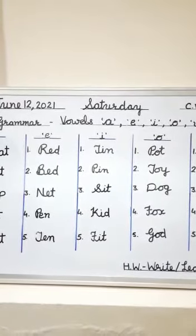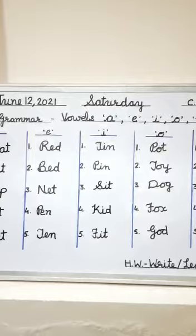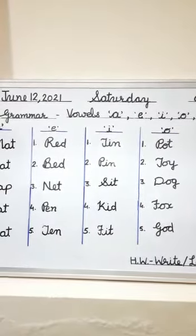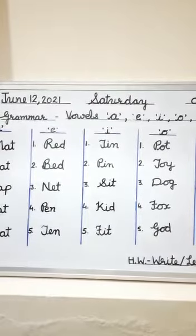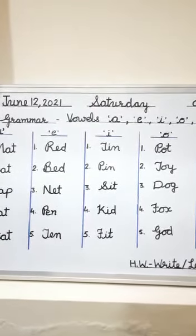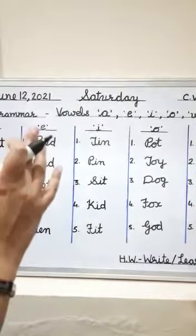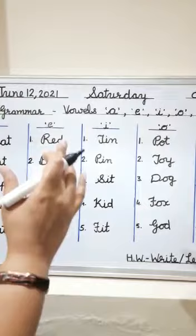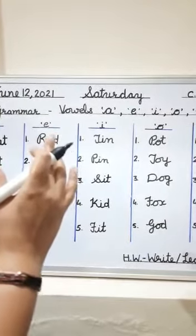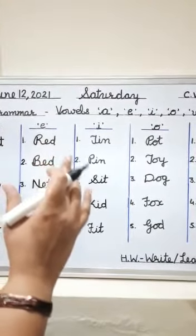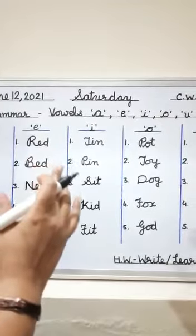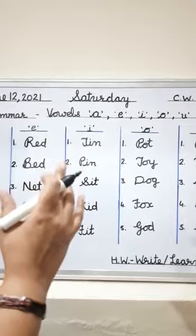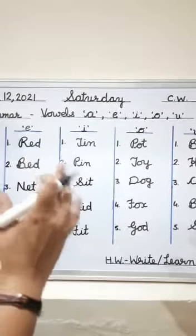As you know, there are 26 alphabets in English from A to Z: a, b, c, d, e, f, g, h, i, j, k, l, m, n, o, p, q, r, s, t, u, v, w, x, y, z. Okay?